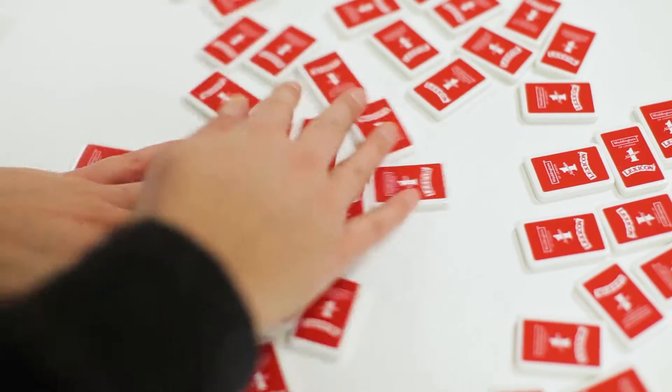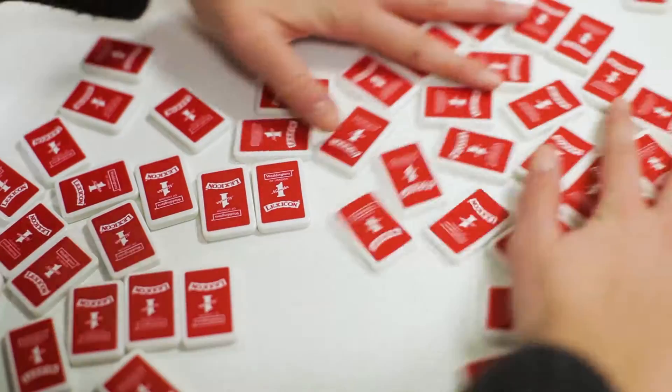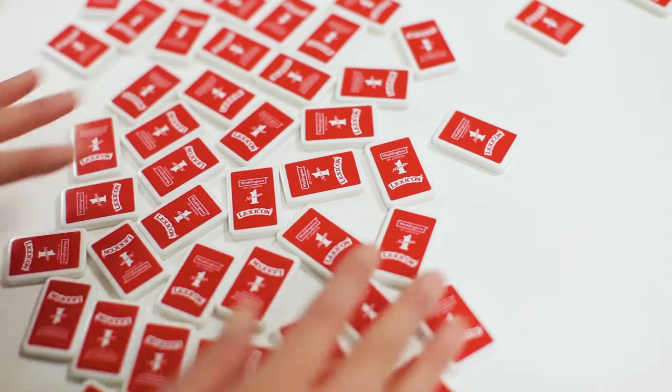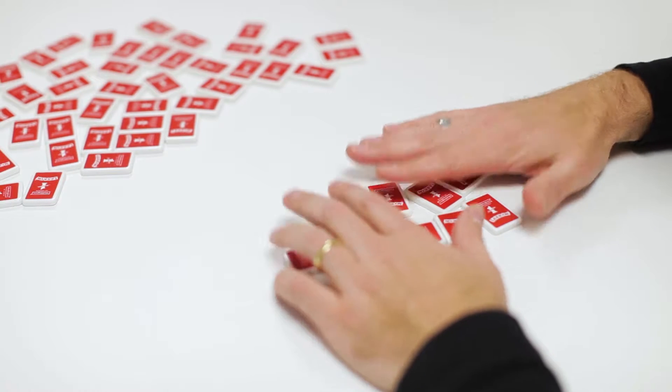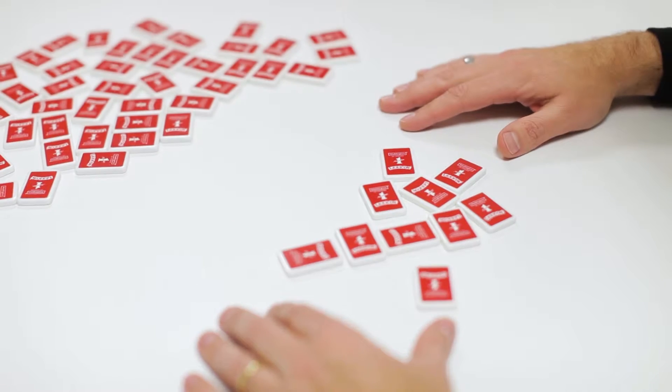Set it up. Shuffle all the letter tiles face down. This is the draw pile. Take 10 tiles and keep them face down. This is your hand. Place the draw pile to one side so you have a clear playing area.